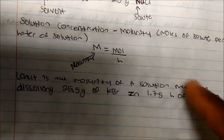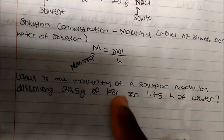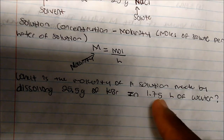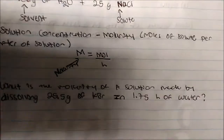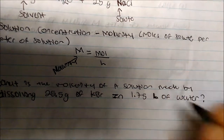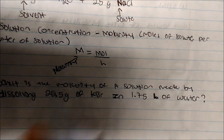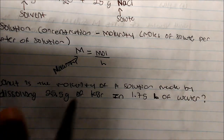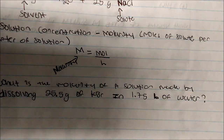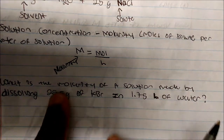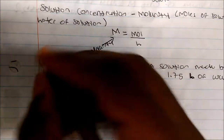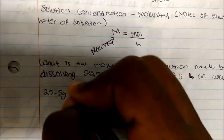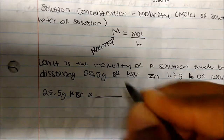What is the molarity of a solution made by dissolving 25 grams of potassium bromide in 1.75 liters of water? We should know that water will always be your solvent, and our solute in this case is potassium bromide. Since molarity is in moles per liter, we have the liters but not the moles — we have grams. So we need to find the molar mass of KBr starting with 25.5 grams.